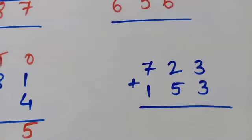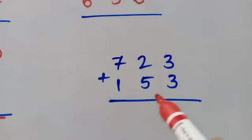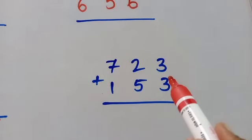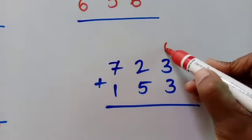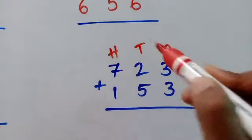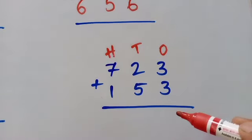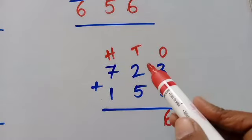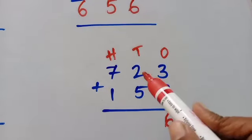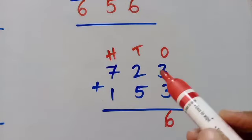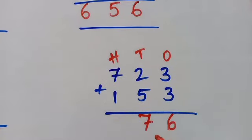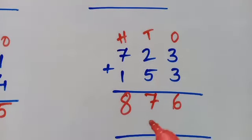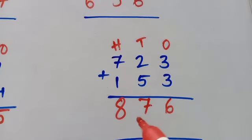The next one is 723 plus 153. First we have to write ones place, tens place, and hundreds. Start from ones place. 3 plus 3 is 6. And in the tens place, 2 plus 5 — 5 should be in your mind, 2 in your hand — so 5 after 6, 7. Write 7. And next 7 plus 1 is 8. So the total answer is 876.